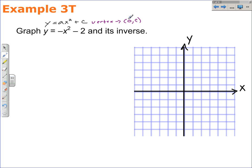The vertex can be taken by the ordered pair zero comma c. In this case, the vertex is going to be zero comma negative two. And that's one point we can graph on our coordinate plane. Zero, negative two.